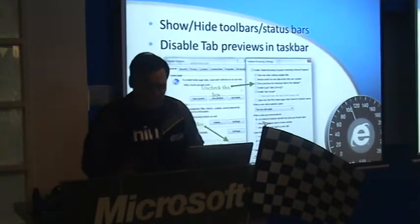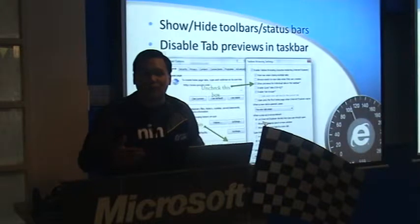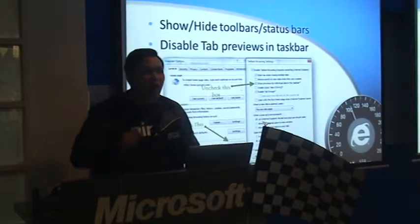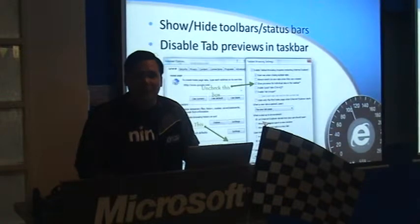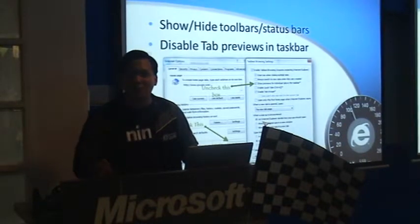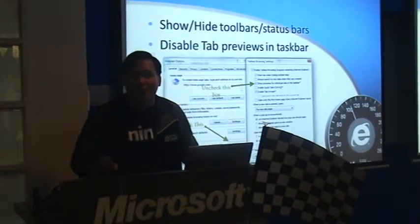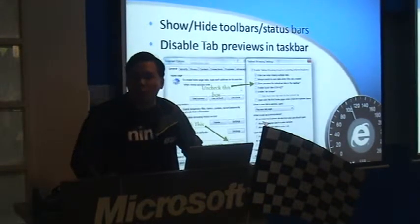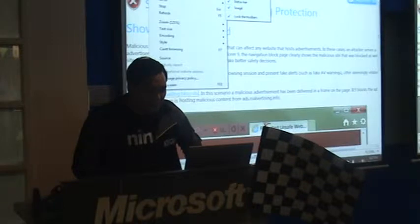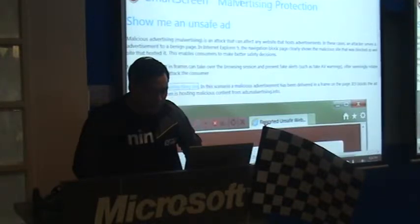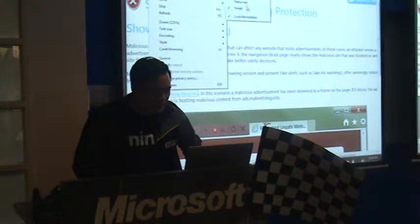Next would be interface tips. The status bar is by default hidden. People sometimes rely on that - they get to see the loading screen and see which hyperlink they're hovering over. You can show the status bar by going to View, then Toolbars, then check Status Bar so it shows at the bottom. You can uncheck it to hide it again.